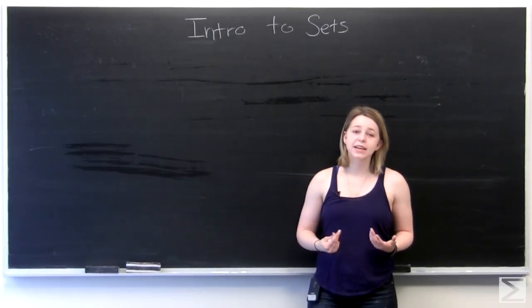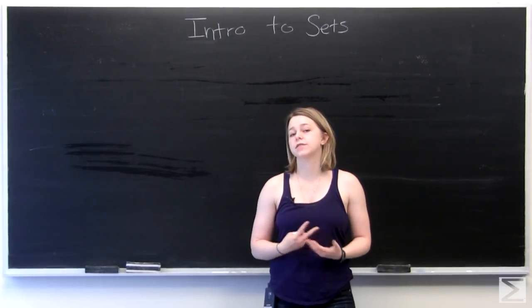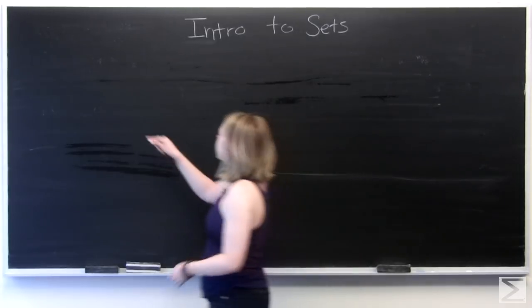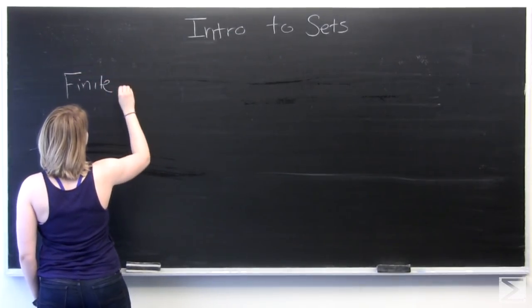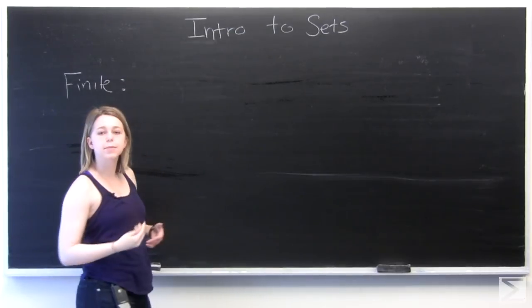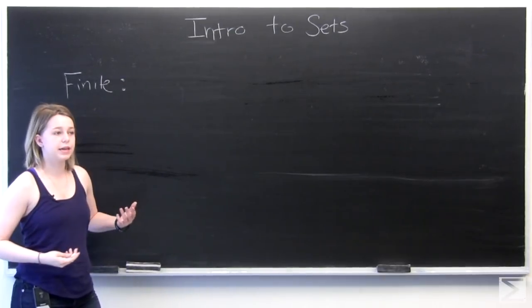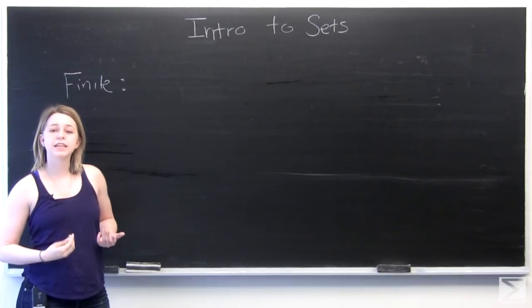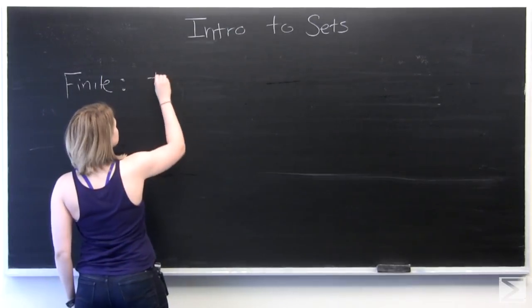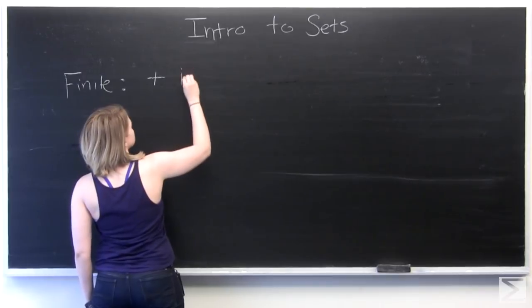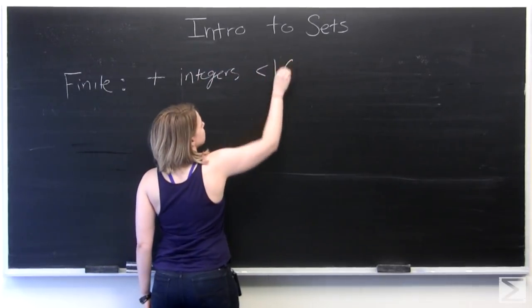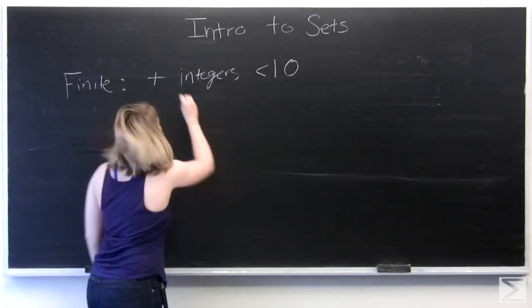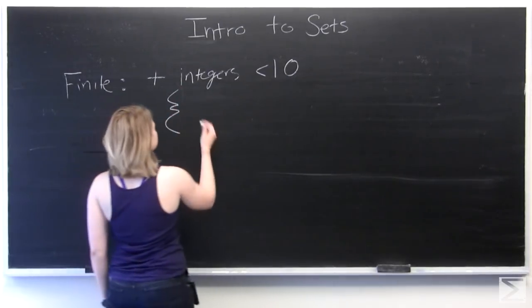And in mathematics we talk about two different kinds of overarching sets. They can be finite sets. So an example of a finite set would be the positive integers less than 10. And so this set would be written like this.